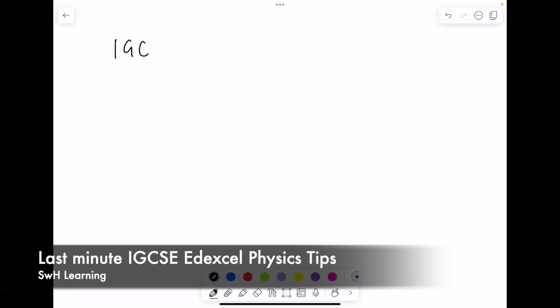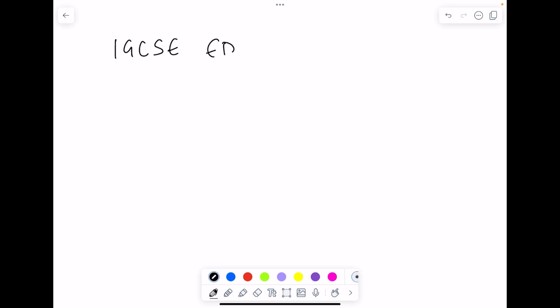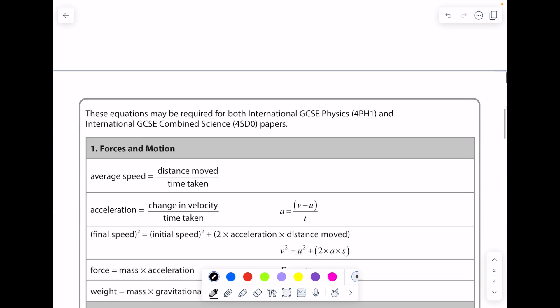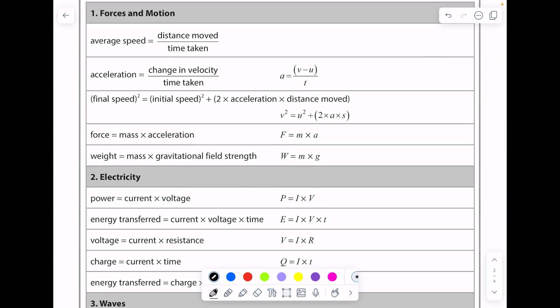Last minute IGCSE Edexcel physics tips. Obviously maths is going to be your best friend here, and it's so important that you know all your key units because you'll be given the equation sheet. Do make sure that you're happy with recognizing the numbers they give you in the exam in terms of which equation they relate to. For example, speed has a unit of meters per second.